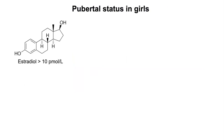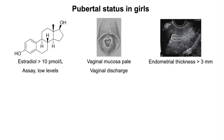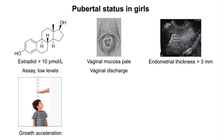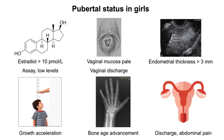Pubertal status in girls can be assessed rapidly with clinical examination supplemented by simple investigations. Estradiol is very low in the pre-pubertal period, but a level more than 10 pmol/L suggests onset of puberty. Given significant variability in estradiol levels, indirect clinical markers of estrogen exposure should also be assessed. Pale pink vaginal mucosa indicates recent estrogen exposure, whereas red and glistening mucosa suggests absence of estrogen. Increased vaginal discharge at breast stage 4 predicts menarche within six to eight months.